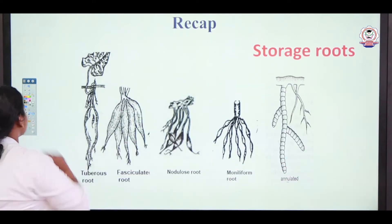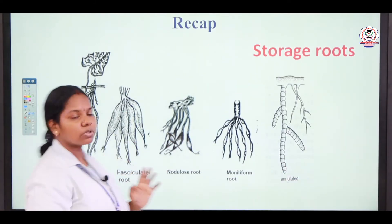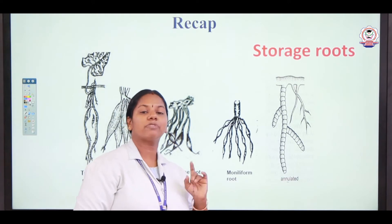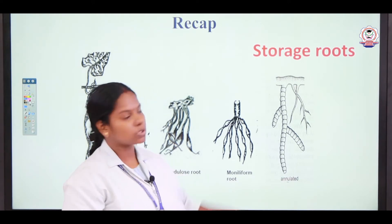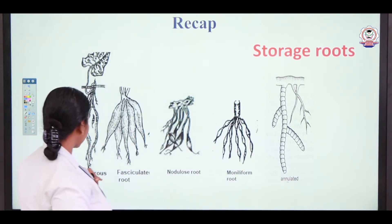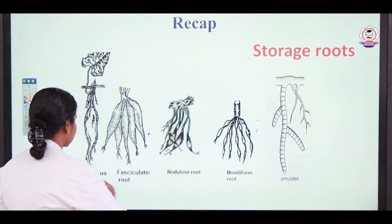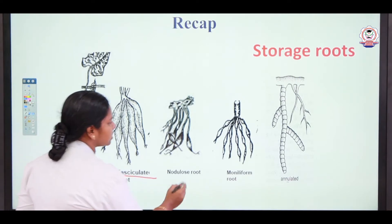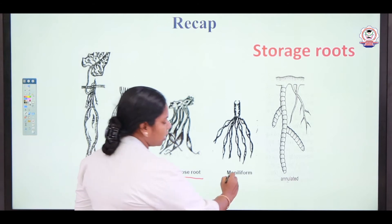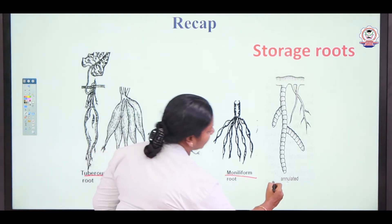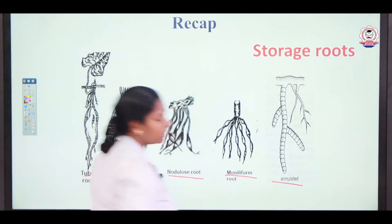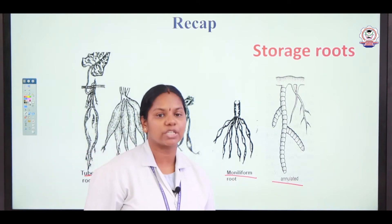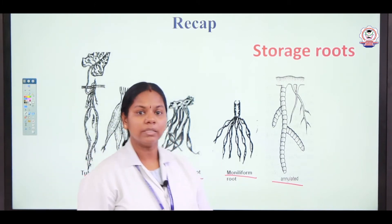In the previous session, we have discussed about the functions of the roots. The first function is storage. Based on storage, we can classify the roots as tuberous roots, fasciculated roots, nodulose root, moniliform root, and annulated roots. In this session, we are going to see some other functions of the roots.